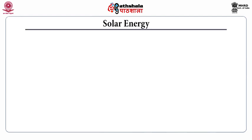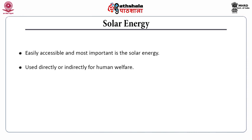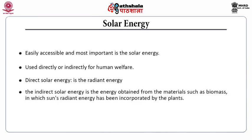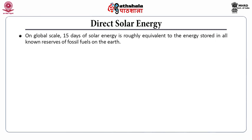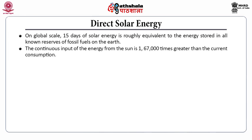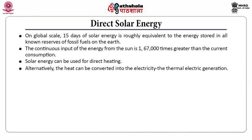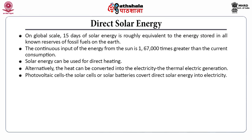Among renewable energy sources, the most easily accessible and important one is solar energy. It can be used directly or indirectly for human benefit. Direct solar energy is the radiant energy, whereas indirect solar energy is energy obtained from materials such as biomass, in which the sun's radiant energy has been incorporated by plants. On a global scale, 15 days of solar energy is roughly equivalent to the energy stored in all known reserves of fossil fuel on earth. The continuous input of energy from the sun is 167,000 times greater than current consumption. Solar energy can be used for direct heating, or the heat can be converted into electricity through thermal electric generation or by photovoltaic cells. Solar cells or solar batteries convert direct solar energy into electricity.